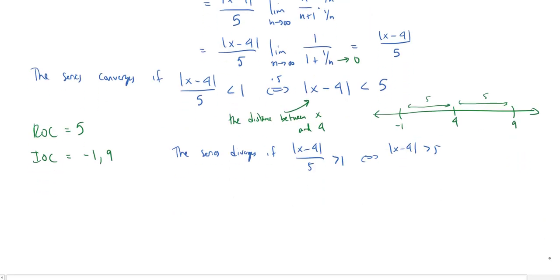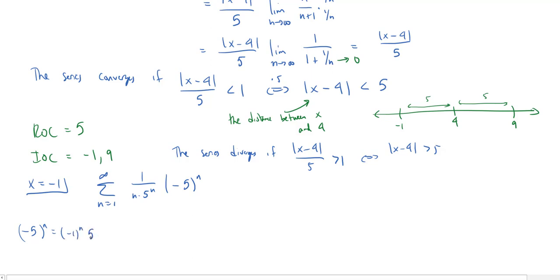Let's scroll down and check those two endpoints. How about negative 1 first? When x is negative 1, our power series becomes the sum from 1 to infinity of 1 over (n times 5 to the n), and (x minus 4) to the n becomes (negative 5) to the n. Now negative 5 to the n equals negative 1 to the n times 5 to the n, so the 5 to the n cancels, leaving the alternating sum of negative 1 to the n over n. By the alternating series test, this converges.